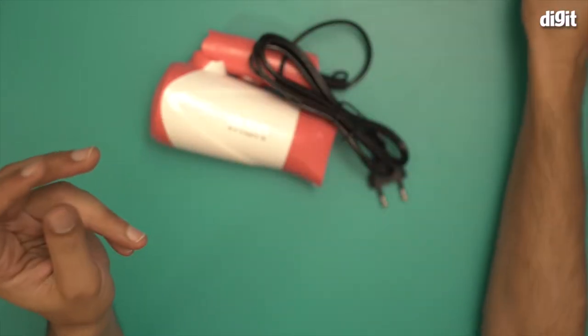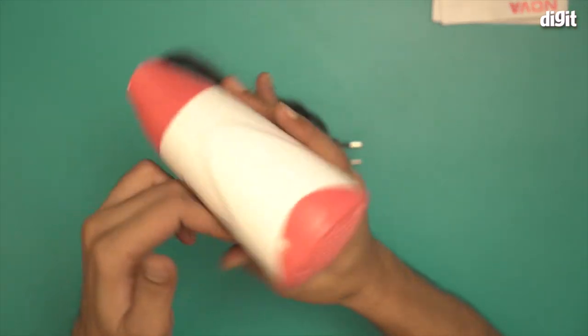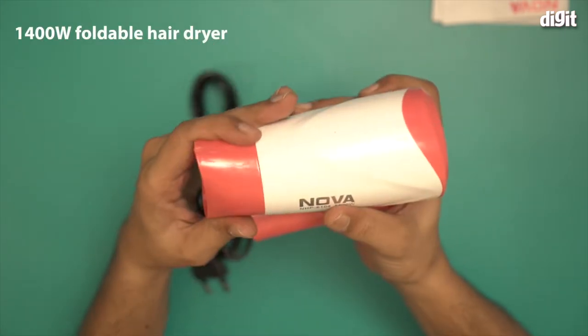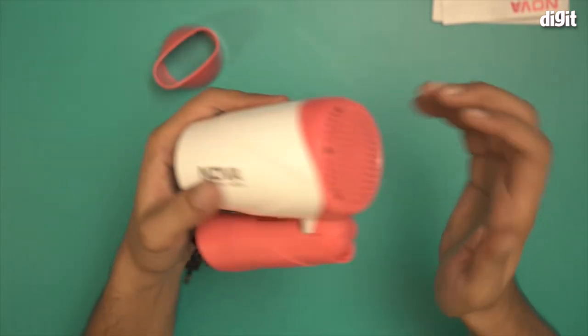I'm going to put this over here and this is the dryer in question. This is the 1400 watt hairdryer. It comes with this nozzle as well which is usually removable. There you go, it's a removable nozzle.